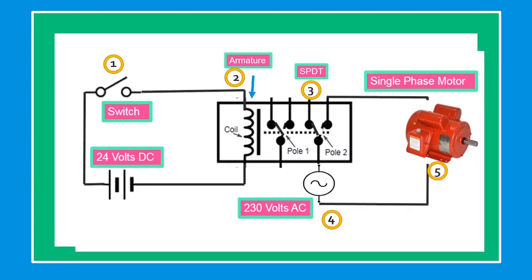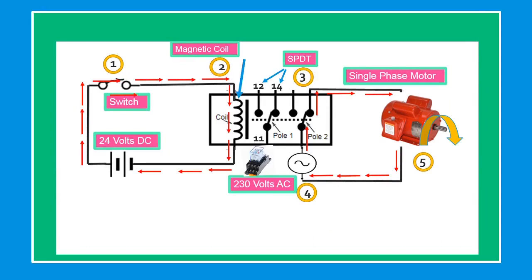In this example, while switch number one is open, the relay is not energized and the electric motor is not running. When we close switch number one, current flows from the 24-volt supply battery through switch number one, through the magnetic coil number two, energizing the magnetic relay. Once the relay energizes, the SPDT contact changes state from 11-12 to 11-14, and the current from the 230-volt power supply flows through the closed contact, through the motor, causing the motor to run.